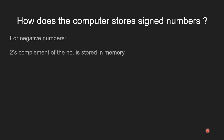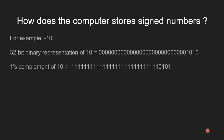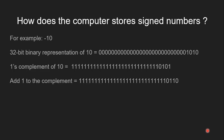But what about negative numbers? For negative numbers, the computer first finds the 2's complement of the number and then stores it in memory. To find the 2's complement, we first find the 1's complement by flipping all bits from 1 to 0 and 0 to 1, and then add 1 to it. For example, for minus 10, this is what the computer stores in memory.